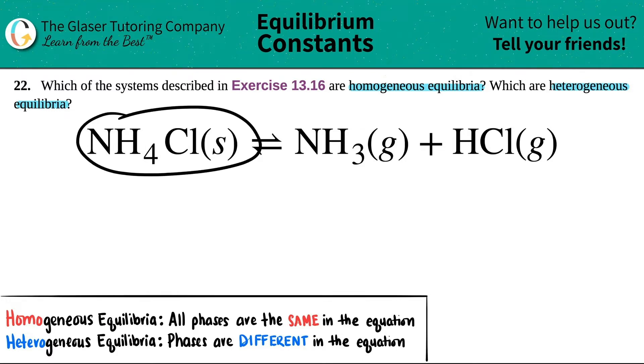In this case, we have to find out if NH4Cl solid, which comes to equilibrium with NH3 gas plus HCl gas, whether this is homogeneous equilibrium or heterogeneous equilibrium.